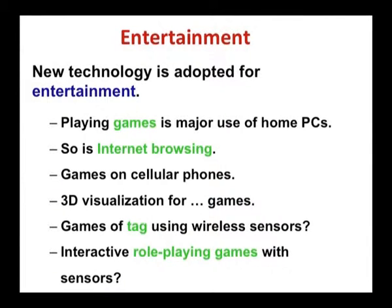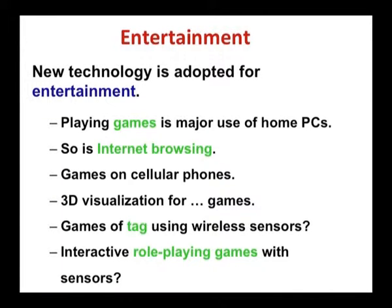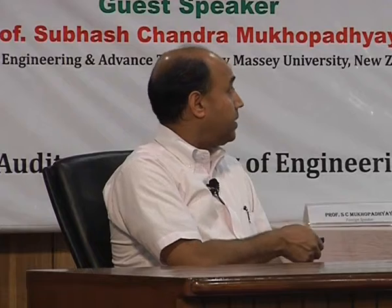Entertainment is one area where new technology is very easy to introduce — people like fun and something new. Lots of new technology comes in gaming. Right now many people sit for hours playing games, and that creates physiological problems. Some technology has been developed where you can get feedback on your posture while playing. Internet browsing, games on cellular phones, and 3D visualization are new things. Many computer scientists working on developing apps are active in this area of research.